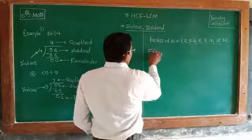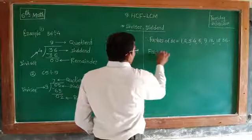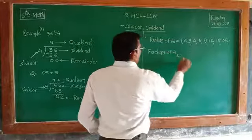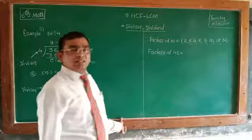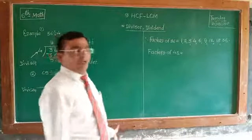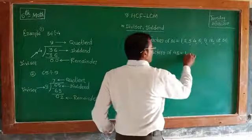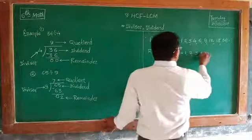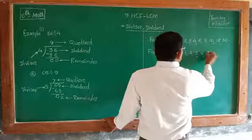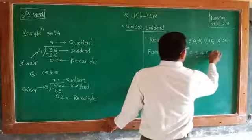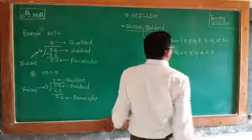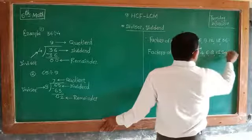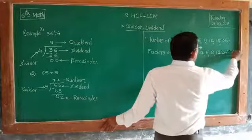Factors of 48: 1, 2, 3, 4, 6, 8, 12, 24, and 48.